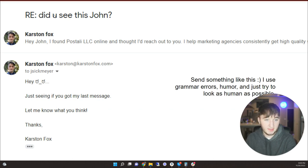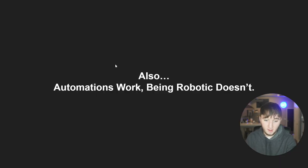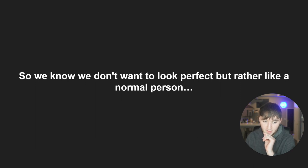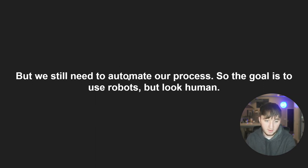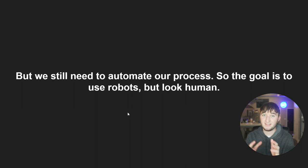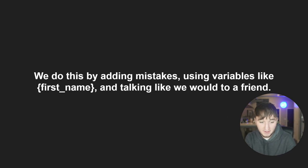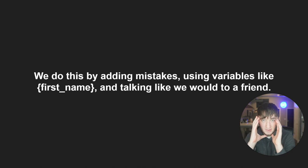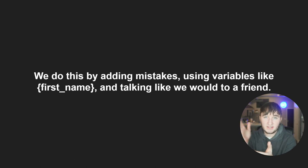By lower-casing things and spelling 'u' instead of 'you,' or even lower-casing a name like 'john' instead of 'John,' you look more human. Automation works, but being robotic doesn't — so we want to use automations to our advantage. We don't want to look perfect; we want to look human by using grammar errors, slang, and humor. Our goal is to look human by using robots: use robots to look human. We do this by adding mistakes, adding variables like first names, and talking to people as if we would a friend.